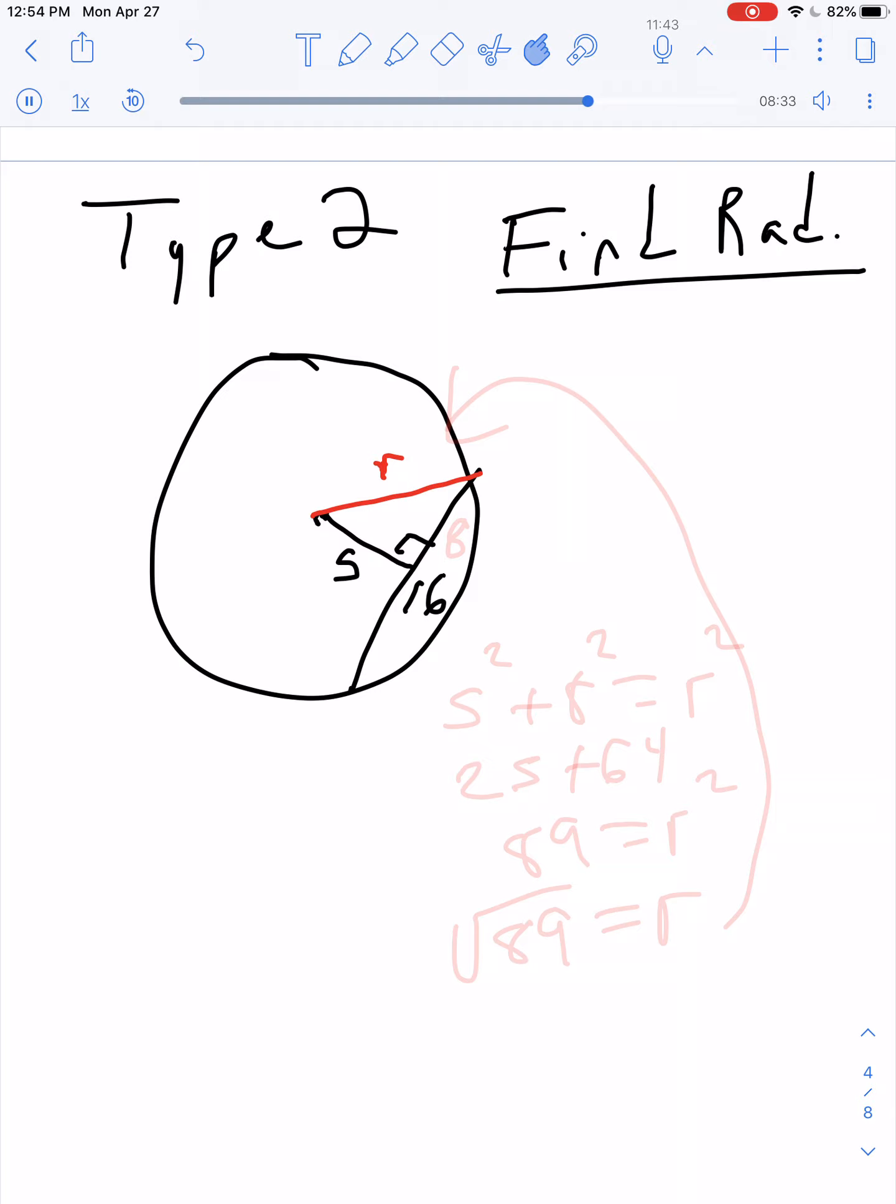Well, we know from the previous rule that if it's perpendicular to a chord, it breaks it in half. So if the whole thing is 16, that would be 8. So then 5 squared plus 8 squared equals R squared. 25 plus 64 is 89. So R squared is 89. So R would be the square root of 89. So in that one, you are given the distance from the center and the length of the chord. Find the radius. In this case, it would be root 89.